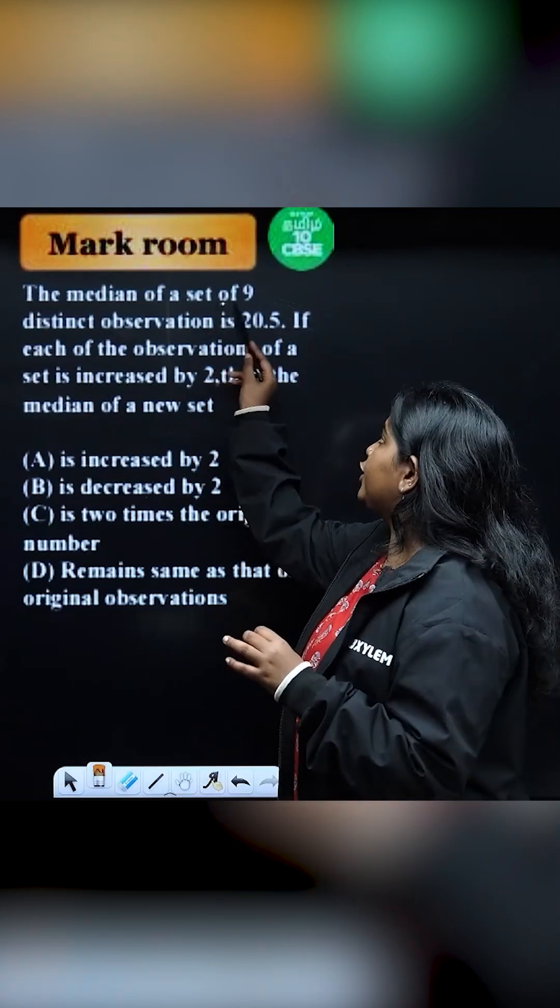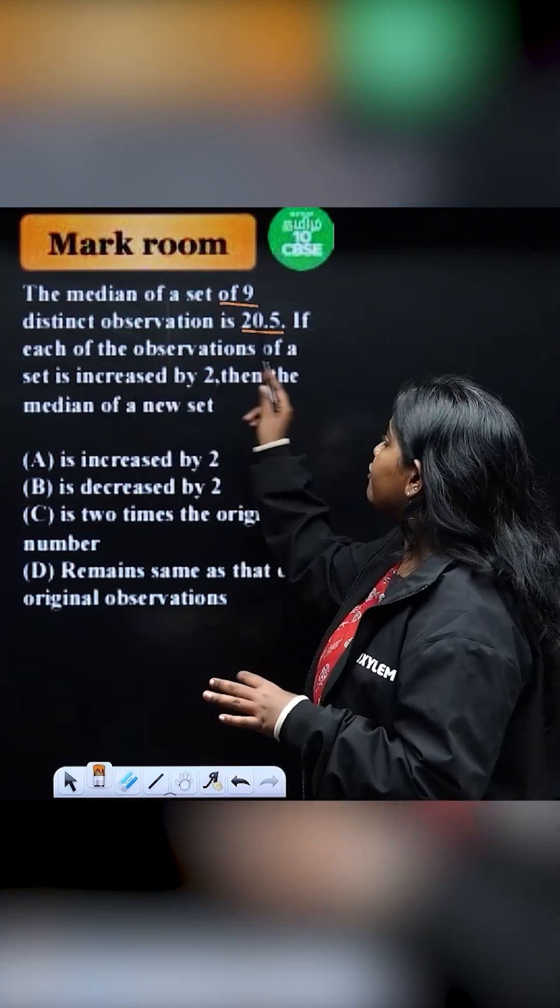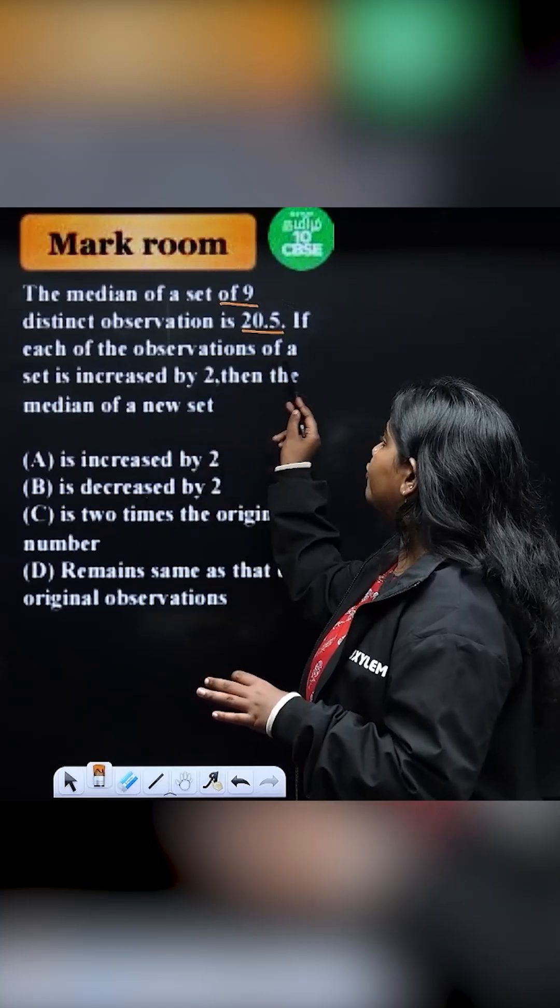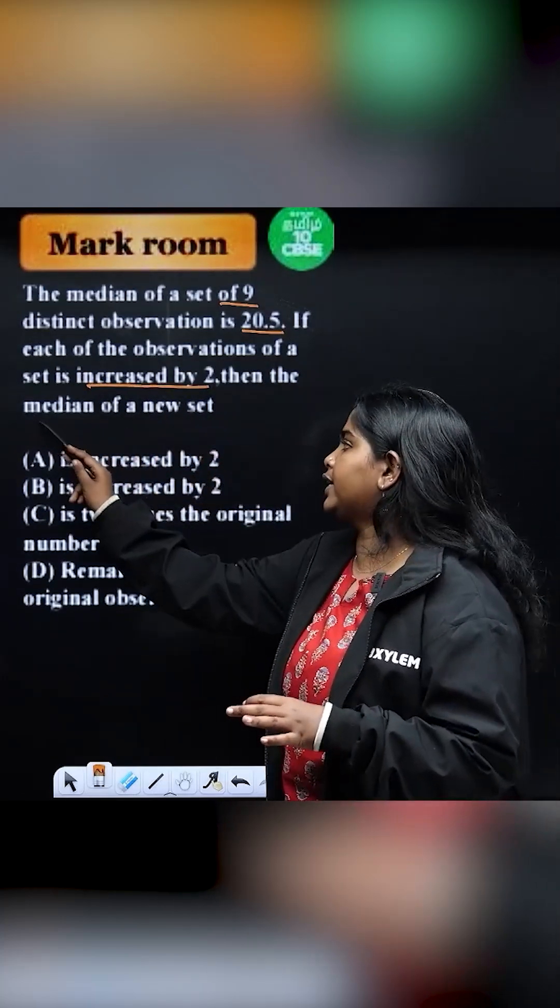The median of a set of 9 distinct observations is 20.5. If each of the observations of a set is increased by 2, then the median of the new set is...